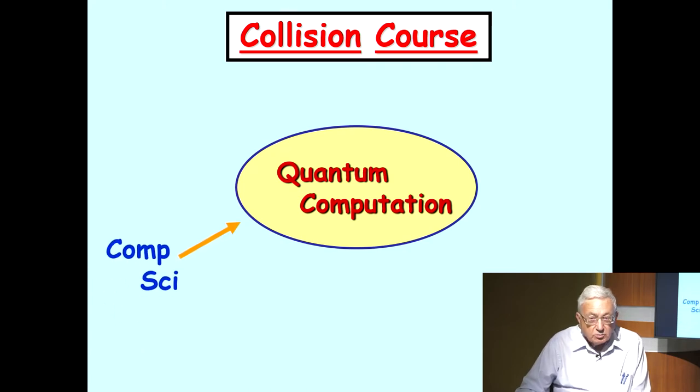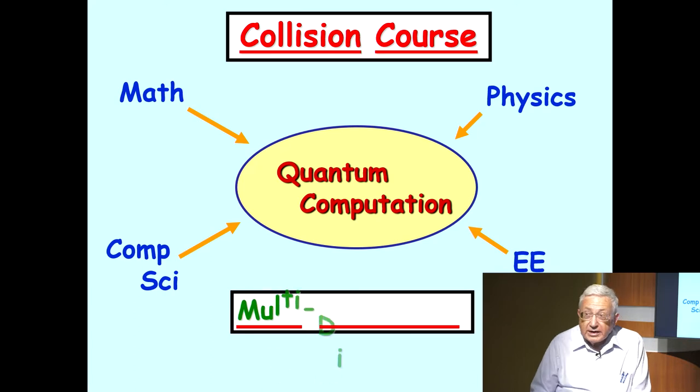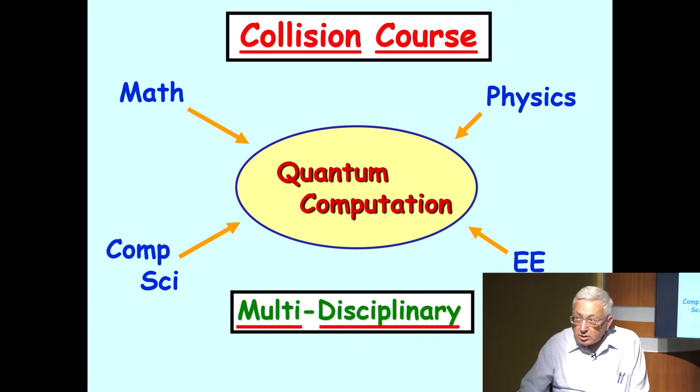Essentially, quantum computing is the collision of many different disciplines. We have computer science, which is definitely part of the discipline, and physics, and math, electrical engineering, and almost every discipline you can think of is somehow involved. This is a multi-disciplinary area, and it requires a computer scientist to know many different fields at the same time. In a certain sense, we would like to have renaissance computer scientists work on quantum computing.